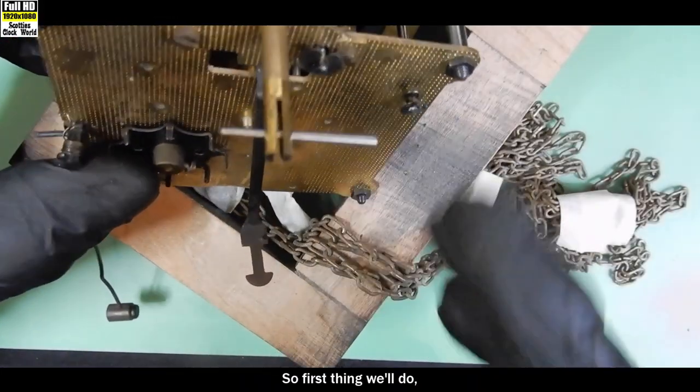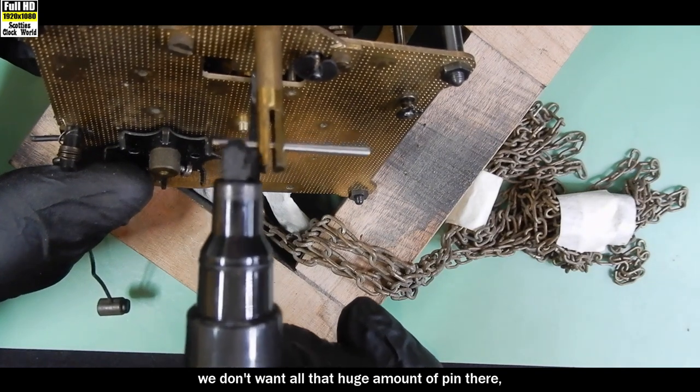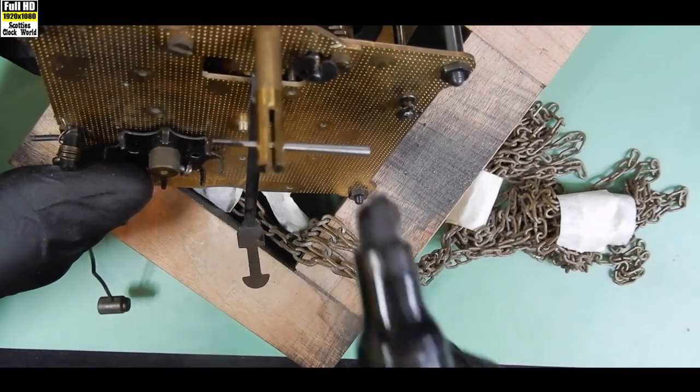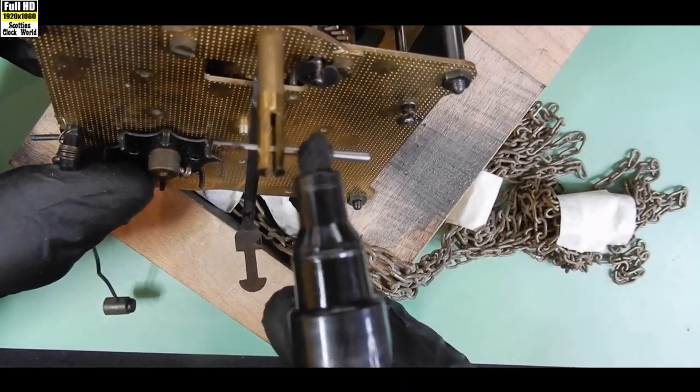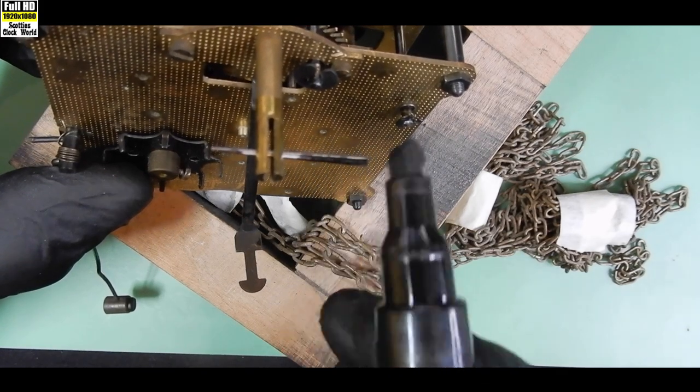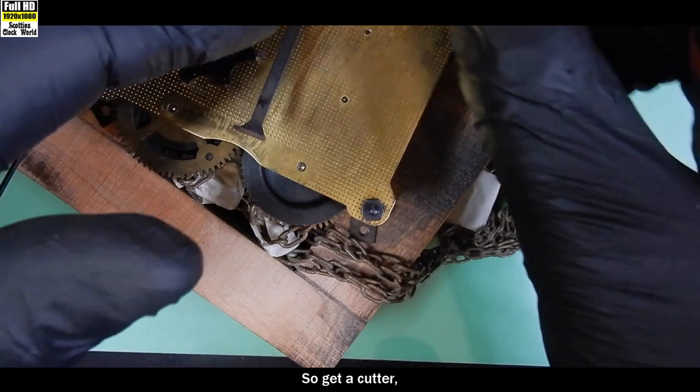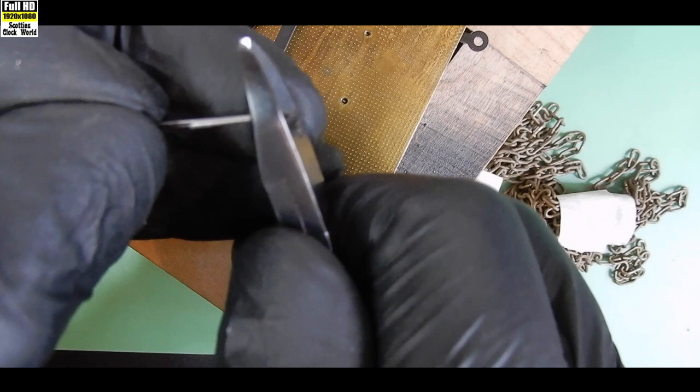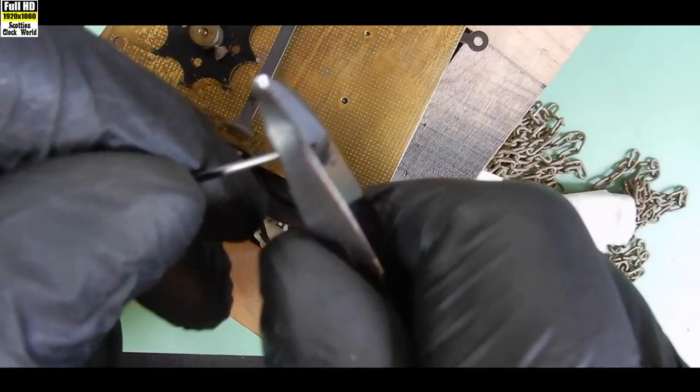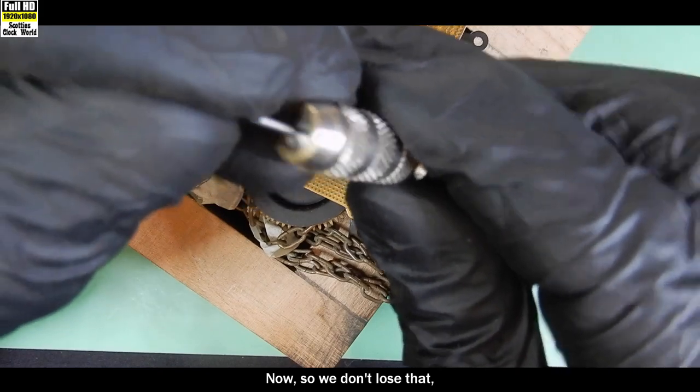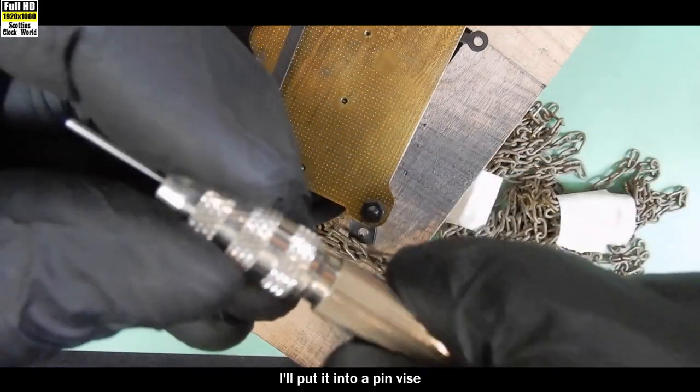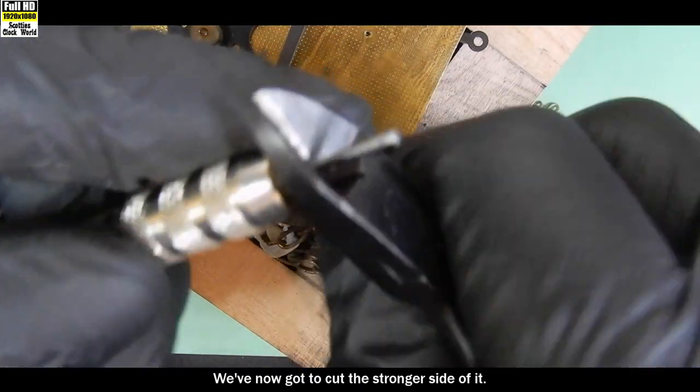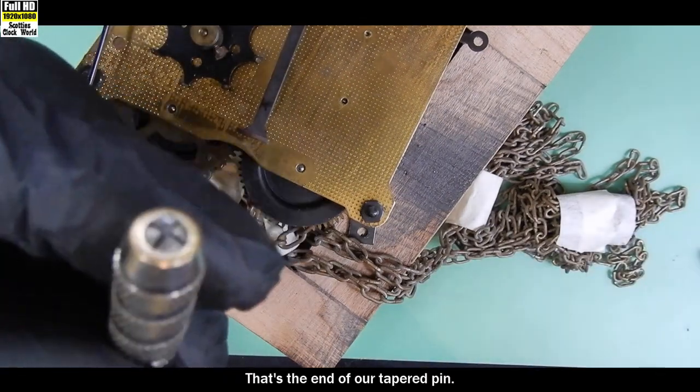So first thing we'll do, we don't want all that huge amount of pin there. We'll mark a line. We want to cut all that off. And from this side, we want to remove all of that. So get a cutter and cut out the piece that we want. Now, so we don't lose that, I'll put it into a pin vise and tighten it down. We've now got to cut the stronger side of it. There it goes. That's the end of our tapered pin.